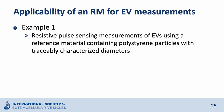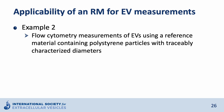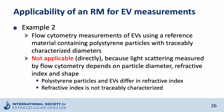The first example is measurement of EV size by resistive pulse sensing using polystyrene particles to calibrate the RPS measurement. This is applicable because the pulse height in RPS depends on the particle volume, which is defined for the polystyrene particles. The second example is flow cytometry analysis of EVs using polystyrene reference particles to obtain the diameter of the vesicles. This is not directly applicable because in flow cytometry, light scattering depends on many parameters including the particle diameter, the refractive index, and the shape. Polystyrene particles and EVs differ in refractive index, and the refractive index of the polystyrene particle standard is not traceably characterized.